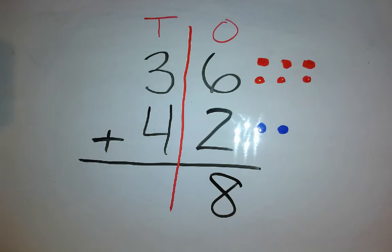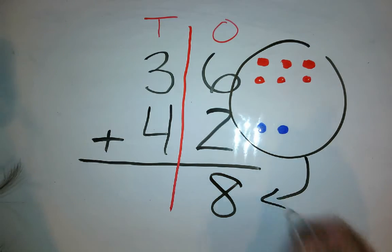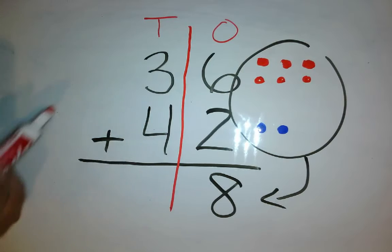So I'm going to write the number 8 down here. So this is, together, that equals 8. Going over here, I need to add 3 plus 4.